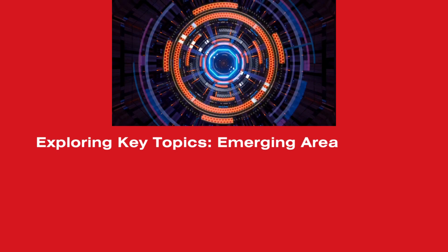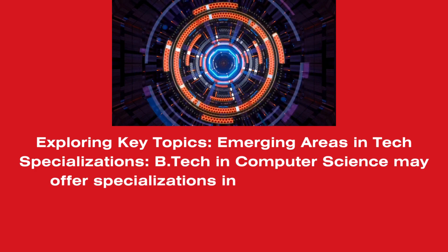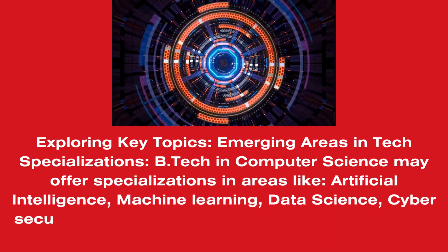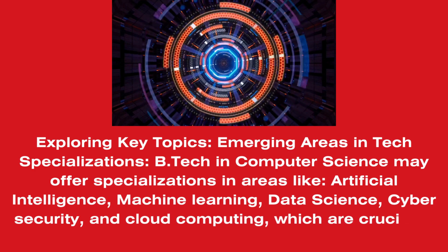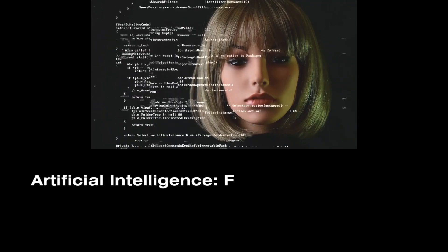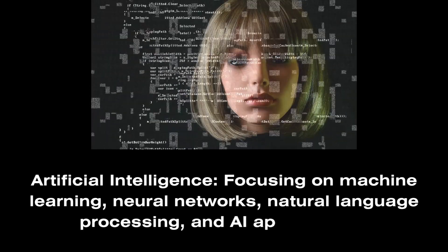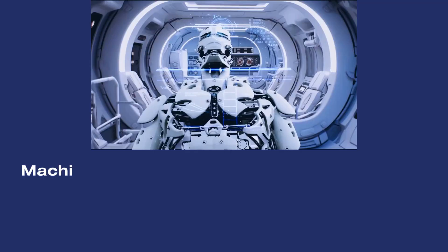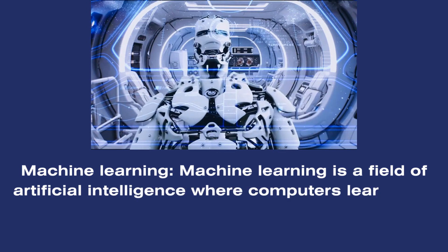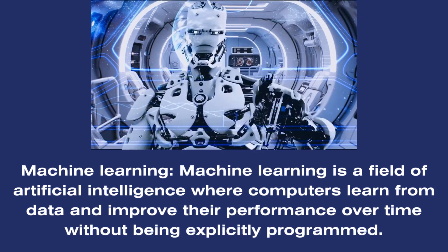Emerging areas in tech — specializations. B.Tech in Computer Science may offer specializations in areas like artificial intelligence, machine learning, data science, cyber security, and cloud computing, which are crucial in the dynamic tech industry. Artificial intelligence focuses on machine learning, neural networks, natural language processing, and AI applications. Machine learning is a field of artificial intelligence where computers learn from data and improve their performance over time, without being explicitly programmed.